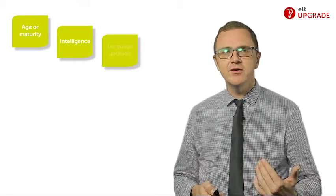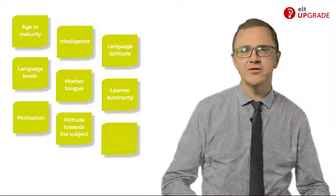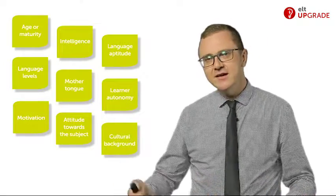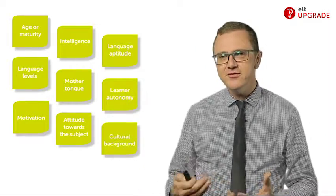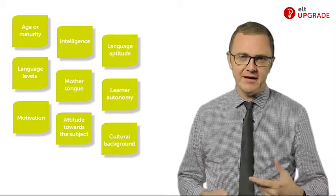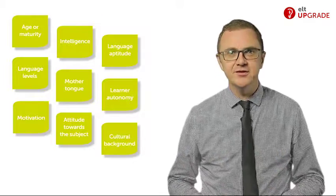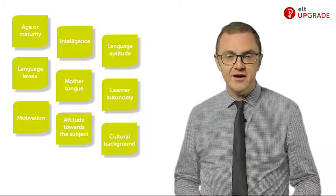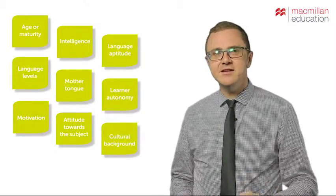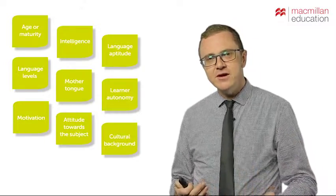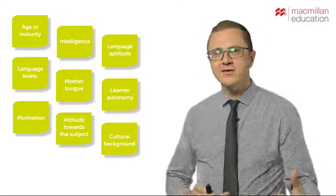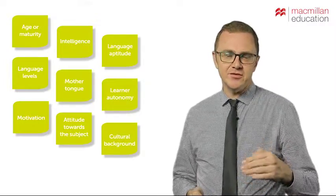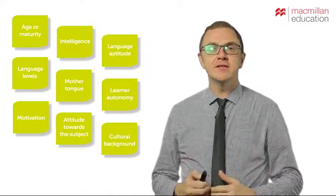Things like age or maturity — in adult classes you might have 18-year-olds and 45-year-olds. When teaching kids grouped at six to eight, that eight-year-old is a third older than the six-year-old, so there's a different level of cognitive ability. Things like different levels of language aptitude and intelligence, different ways they like to learn, different language levels. And in some international environments, different mother tongue. There are also different levels of learner autonomy and different motivations for being in the class. These are all the things that make up mixed ability classes.